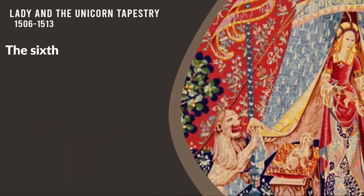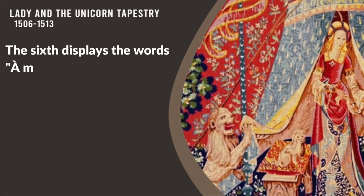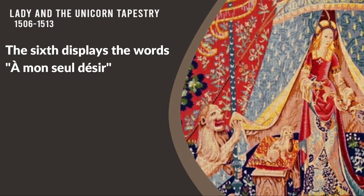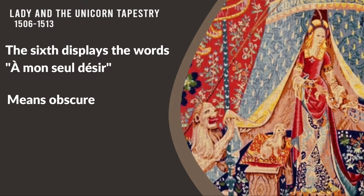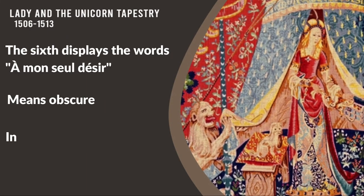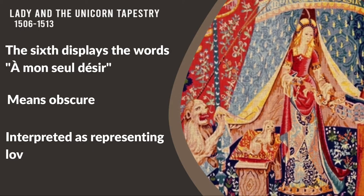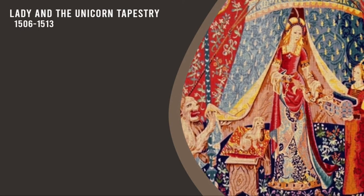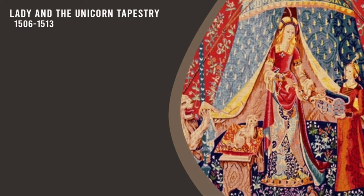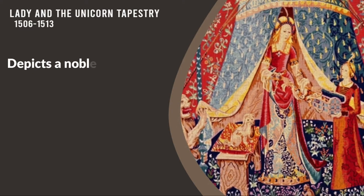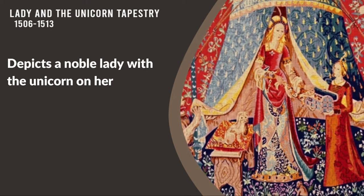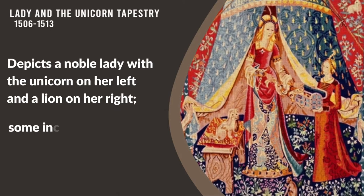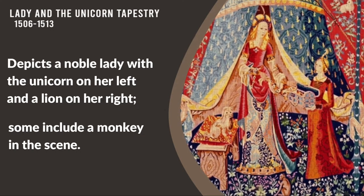The sixth displays the words 'A Mon Seul Désir.' The tapestry's meaning is obscure but has been interpreted as representing love or understanding. Each of the six tapestries depicts a noble lady with the unicorn on her left and the lion on her right. Some include a monkey in the scene.